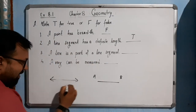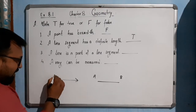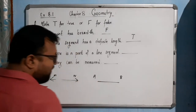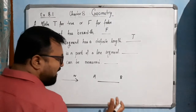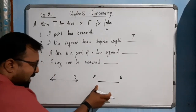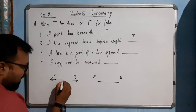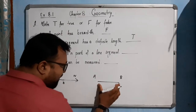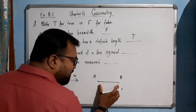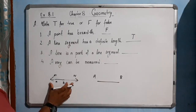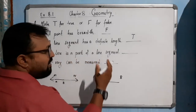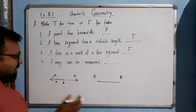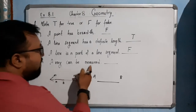Next: 'a line is a part of line segment' — suppose line MN. This is false, because the correct statement should be: 'a line segment is a part of a line.' We can take out this portion A, B and represent it as a line segment. So a line segment is part of a line, but saying a line is a part of a line segment is a false statement.